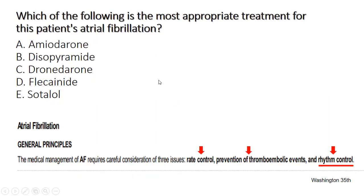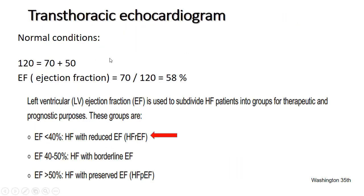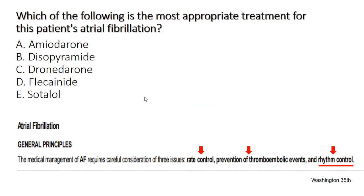Tóm lại từ khám thực thể: bệnh nhân đã xác định có rung nhĩ kịch phát và có triệu chứng thực thể của suy tim sung huyết. Kết hợp với siêu âm tim, bệnh nhân có tình trạng suy tim sung huyết. Câu hỏi yêu cầu chọn điều trị thích hợp nhất đối với tình trạng rung nhĩ của bệnh nhân này.